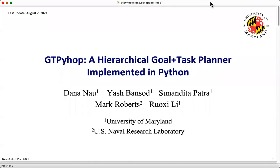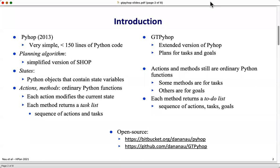I'm Dana Nau from the University of Maryland, and I'm going to talk about GT PyHop, a hierarchical planner that plans for both goals and tasks. GT PyHop is based on PyHop, a planner released in 2013 that has a very simple implementation, less than 150 lines of Python code.